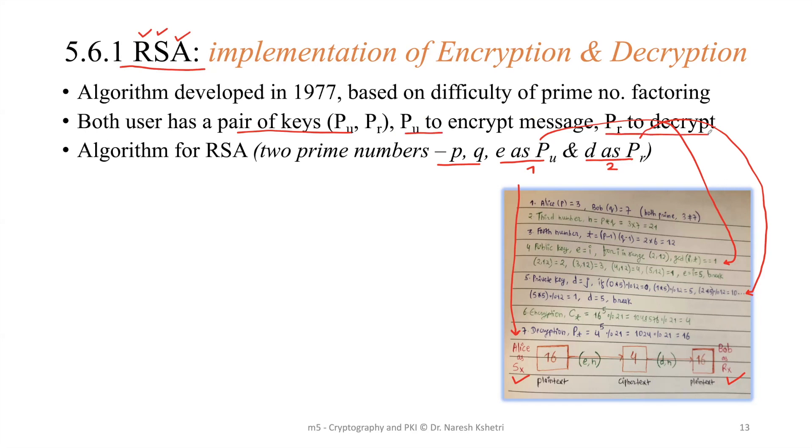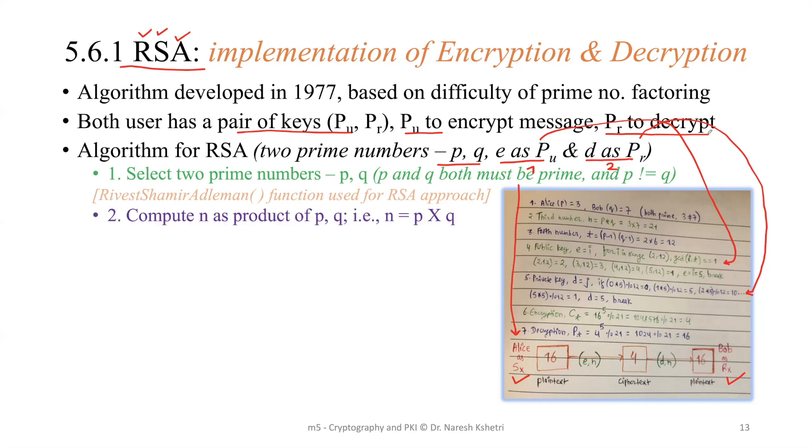So let me start with number one, the selection of two prime numbers. So P and Q, here selected three and seven must be prime, and P should not be equal to Q. That means we cannot take two, three, or two, seven. So here, we have used the function Rivest-Shamir-Adelman in a separate module to make it easy to apply the RSA approach.